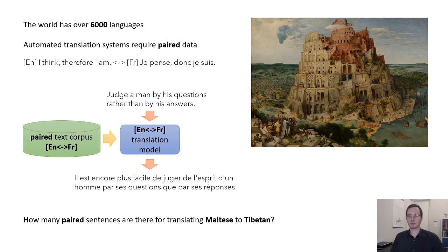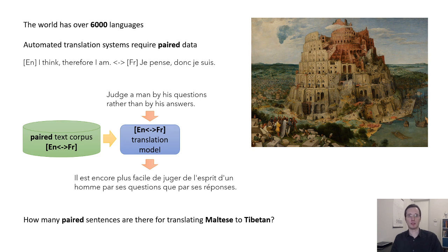But this approach can be pretty onerous when you consider how many languages there are, especially when it comes to obscure languages or languages that don't have as many speakers — sometimes referred to as low-resource languages. For instance, how many paired sentences do you think exist in datasets for translating Maltese into Tibetan? When researchers at Google had to contend with this problem for Google Translate, they thought about more creative solutions.